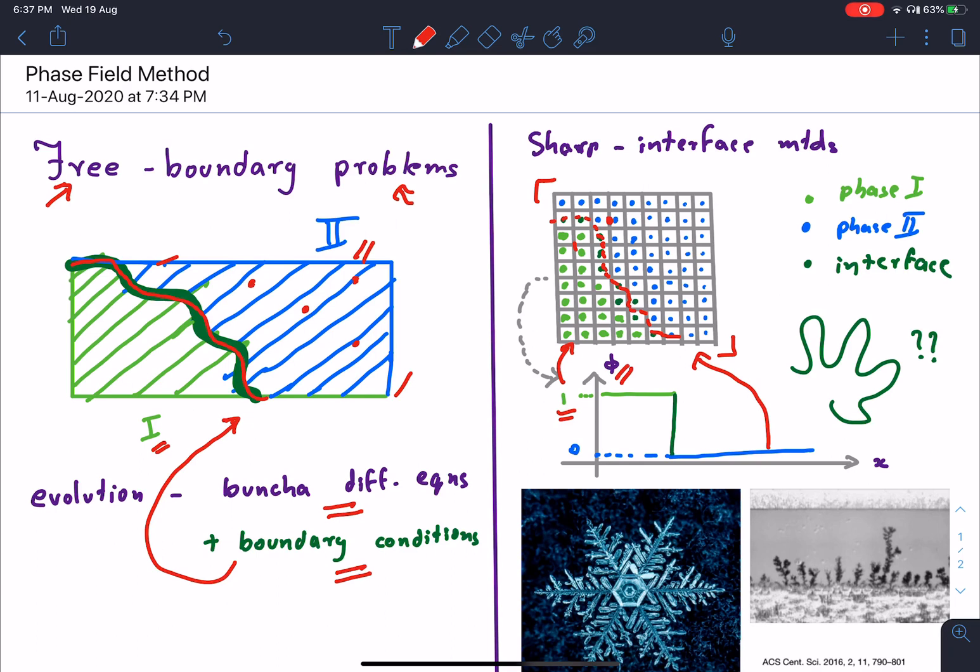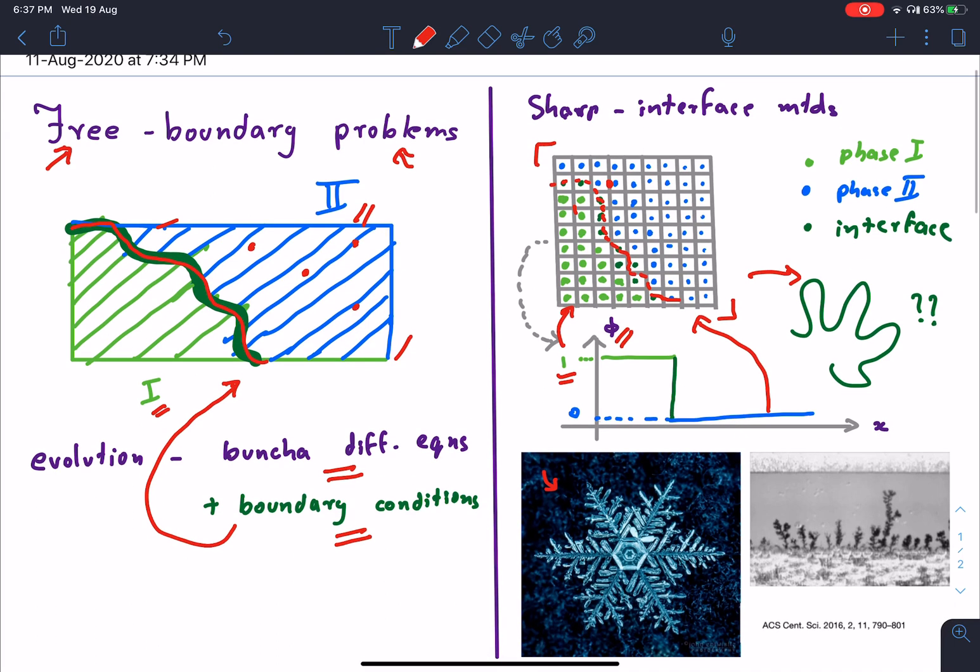Tracking these boundaries becomes really difficult when they take complicated shapes, for example like the ones found in snowflakes or like these lithium dendrites that we see growing on lithium-ion batteries.